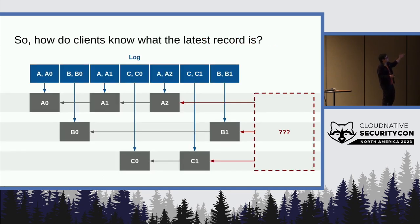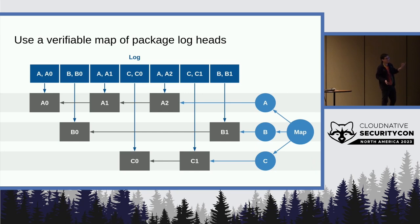So how do clients know what the latest record is? We have a verifiable map that associates every log ID, which is the hash of its name, with the most recent value in that log. And in that way, people can verifiably say, that was the latest thing the registry knew at that point in time. That's as far as I have to read up to.